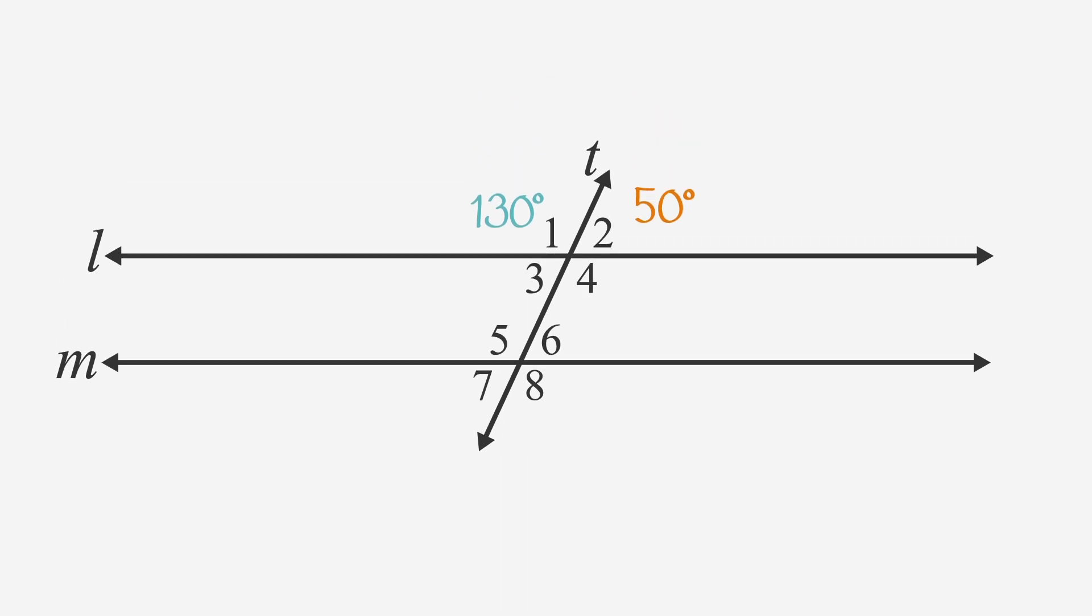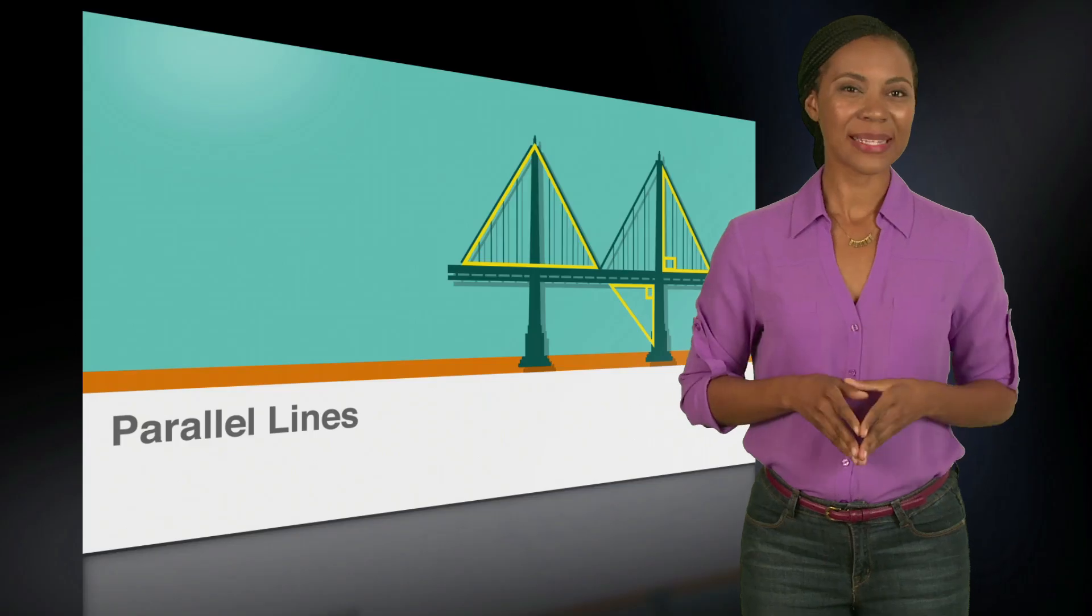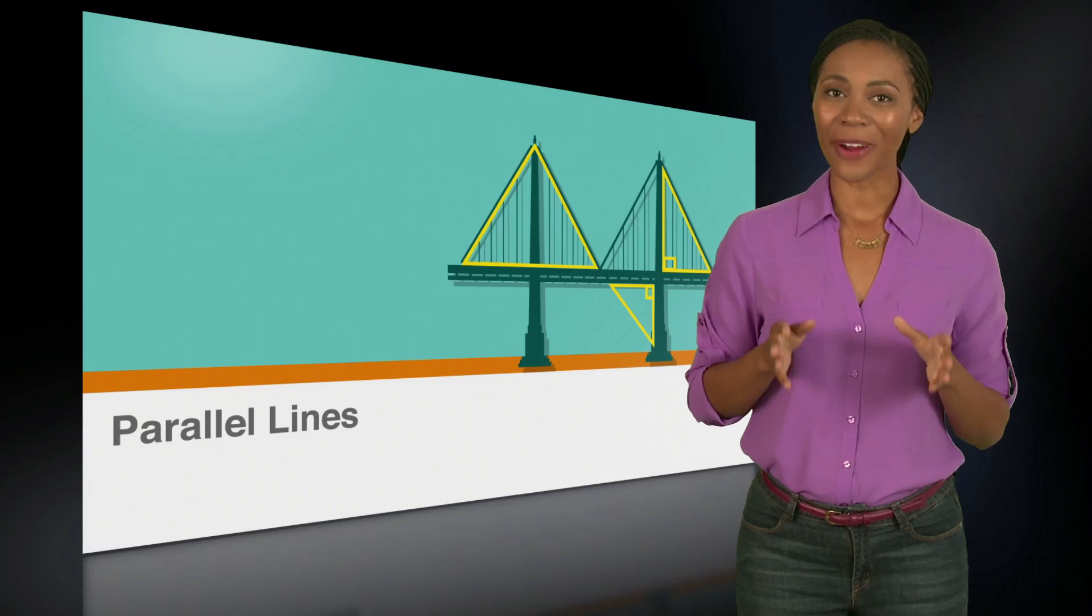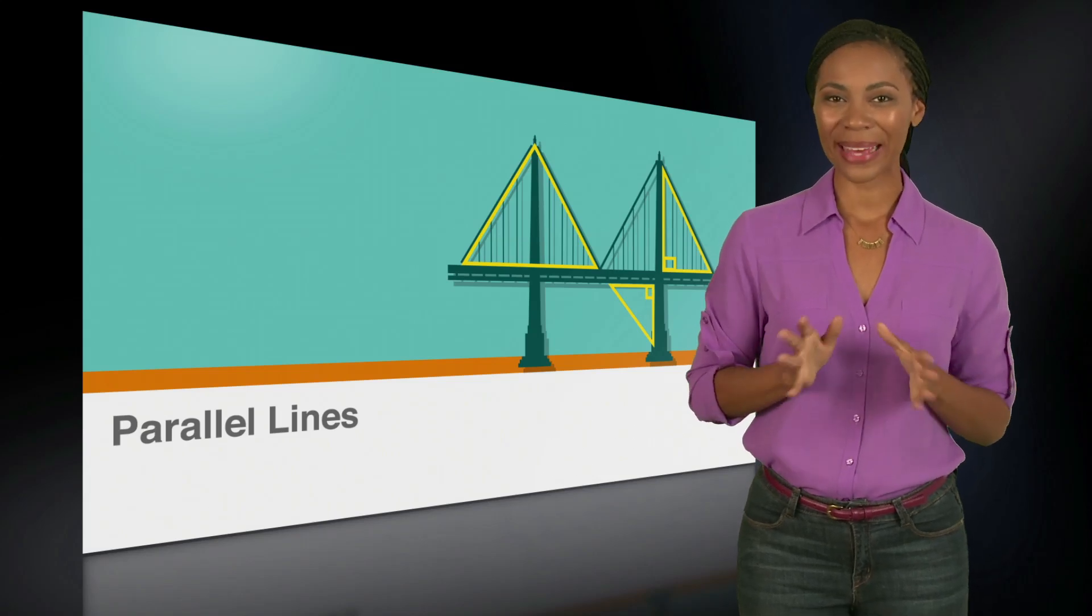Labeling our vertical angles, angle 3 is 50 degrees and angle 4 is 130. Since angles 5 through 8 are corresponding angles, we now have the measurement for every angle in this figure. Just a few pieces of information made solving for 8 angles relatively painless.